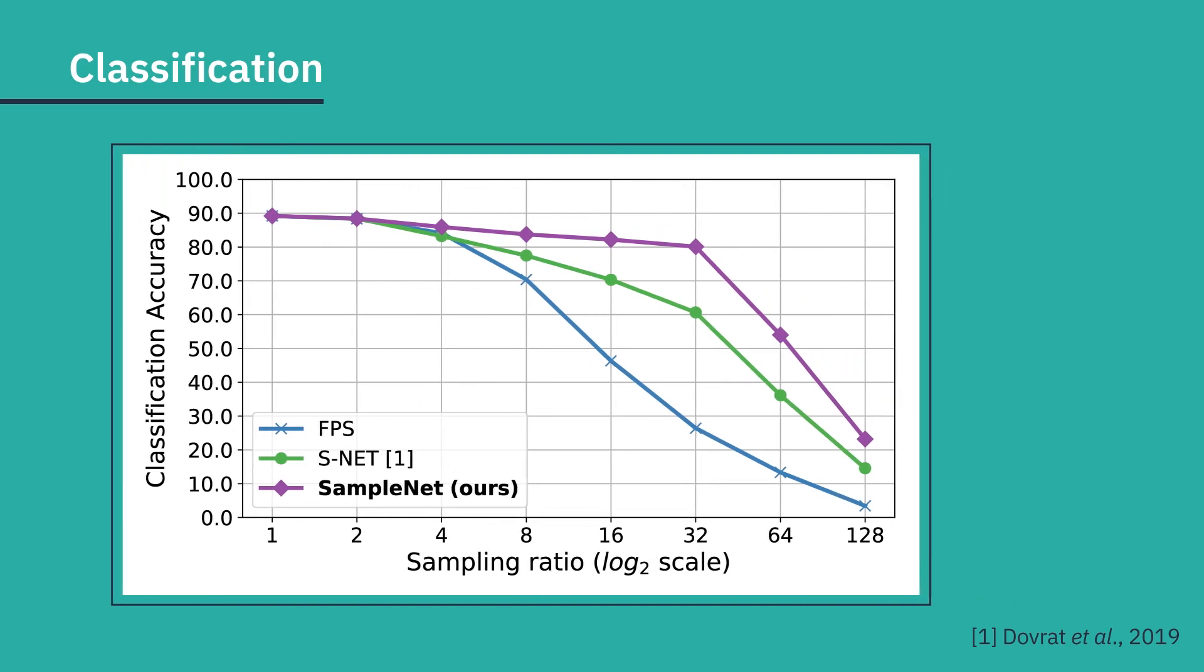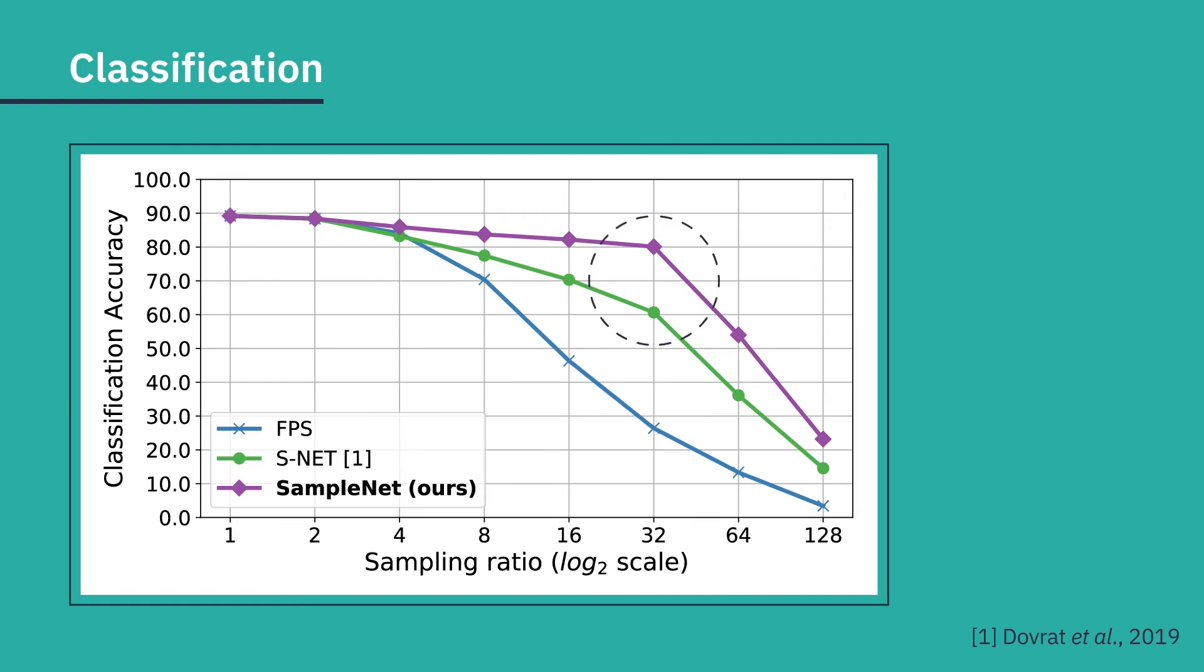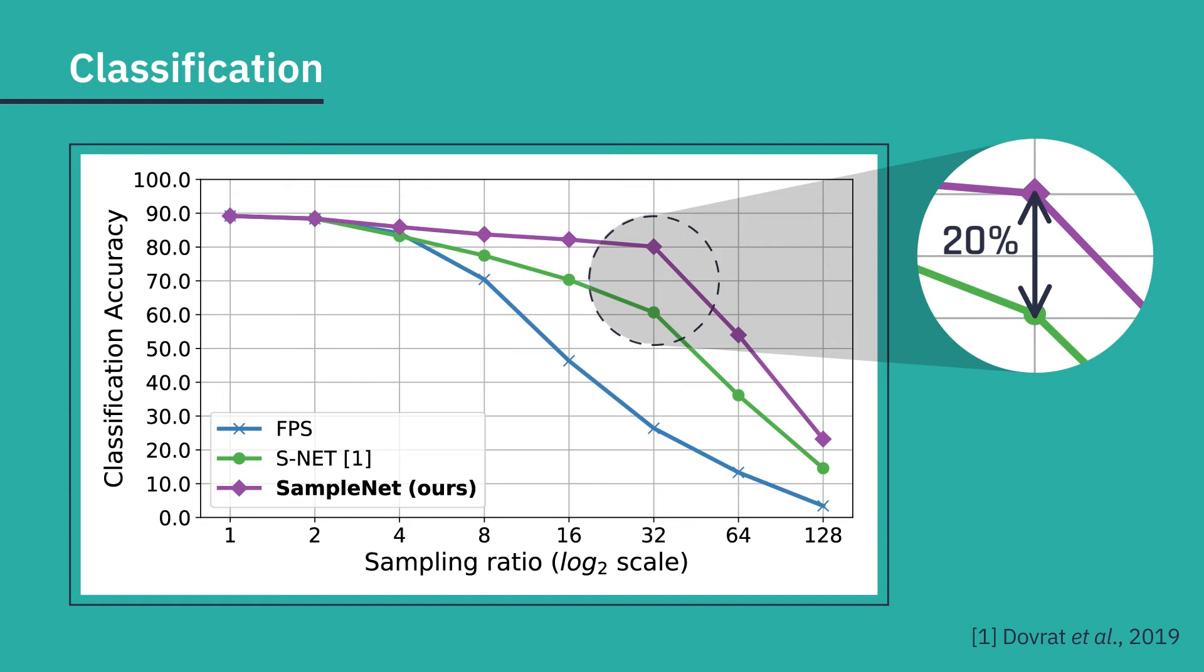For example, at sampling ratio 32, which is only 3% of the input data, it achieves an improvement of 20%. This shows our sampling method learned to select discriminative points for the classification task.